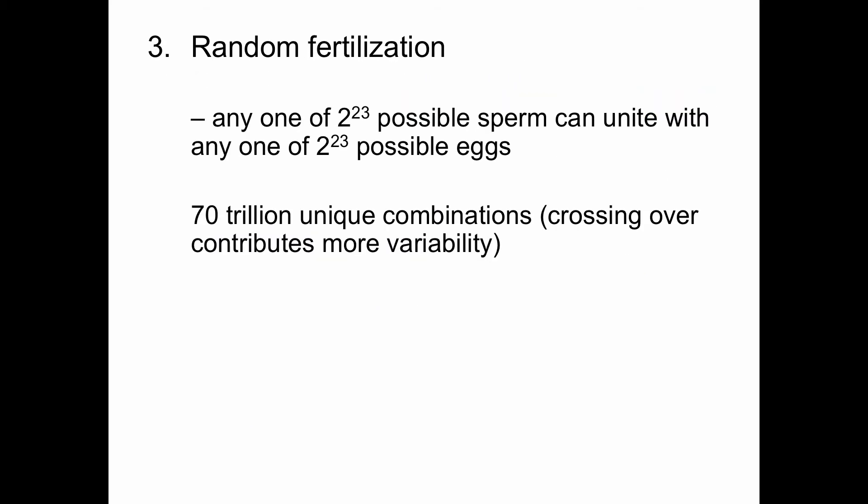The third source of variability is random fertilization. We have two to the 23rd power possible sperm configurations and two to the 23rd power possible egg configurations, which gives us somewhere in the neighborhood of 70 trillion unique combinations. That is why you are not exactly the same as your brother, sister, or cousin — even coming from the same parents.